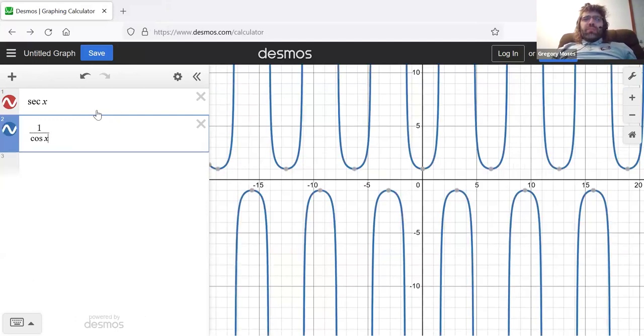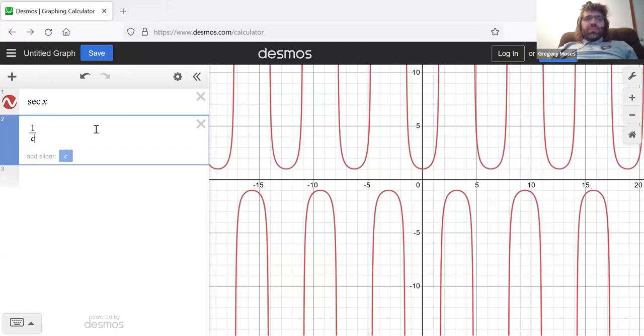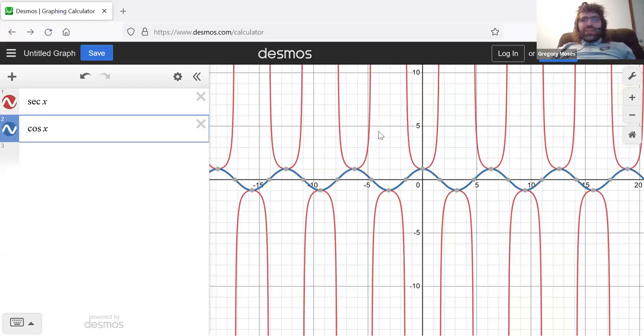Well, the secant, remember, is one divided by the cosine. Let's compare the graph of the secant with the graph of the cosine. Okay, and now you're seeing some relationship between these two.